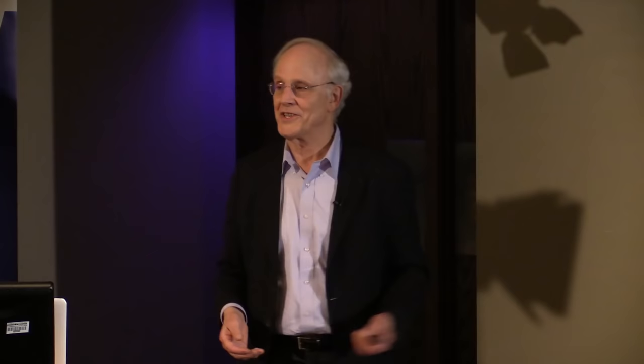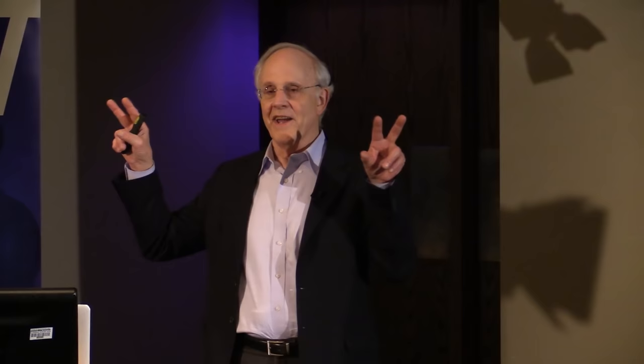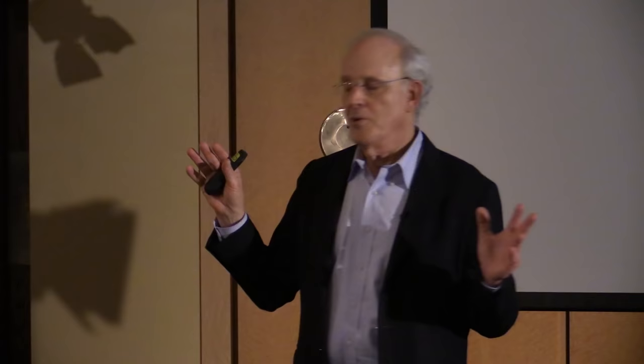Rutherford was very surprised when some of these alpha particles came right back at him, or at Marsden and Geiger. So he applied the theory of electromagnetism, Maxwell's theory, to calculate what it would look like if these alpha particles were hitting an atom which actually had its charge localized in a very small central portion.